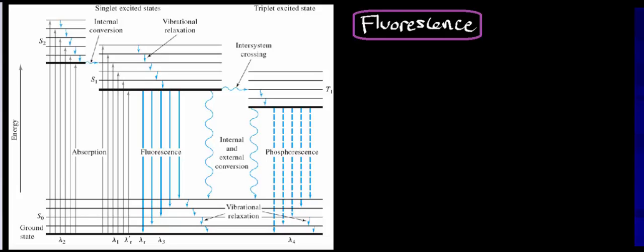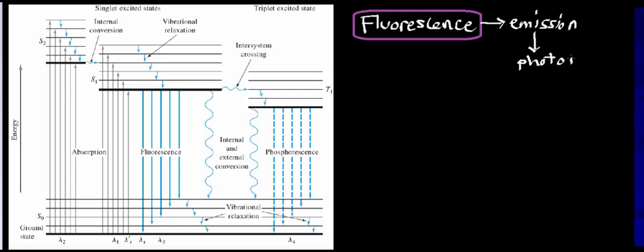Welcome back to the analytical chemistry and instrumental analysis playlist. In this video we're going to talk about a really cool phenomenon called fluorescence. Before we get into the nitty-gritty details, I want to talk about what it is from a very general perspective. It's basically a type of emission, and what it's emitting is a photon of light.